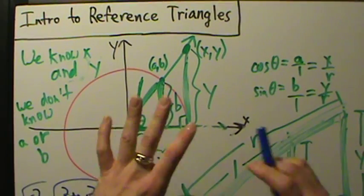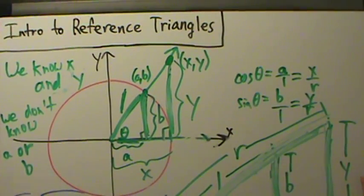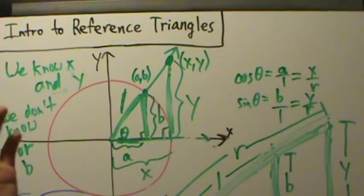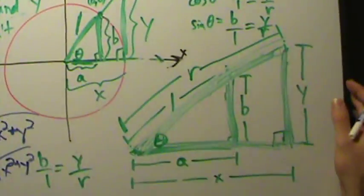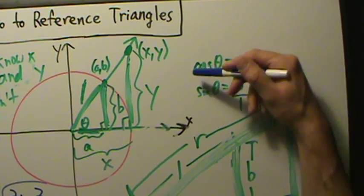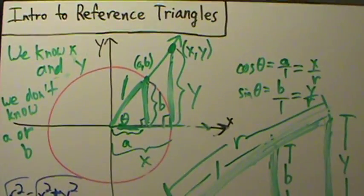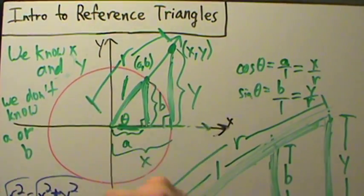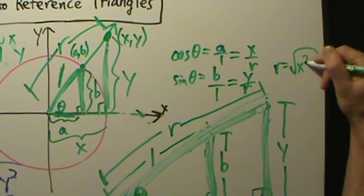When we take the square root, technically there's a positive and negative root, but since R measures a distance we keep it positive. So R equals the square root of x squared plus y squared. This larger triangle is an example of what's called a reference triangle. We'll do more concrete examples with actual numbers in the next video. R is the hypotenuse of the large triangle, and R equals the square root of x squared plus y squared.